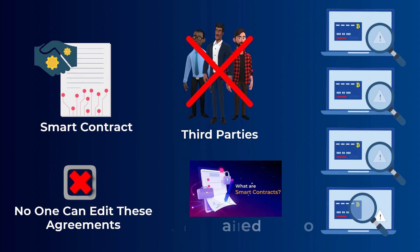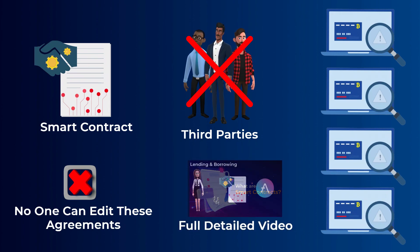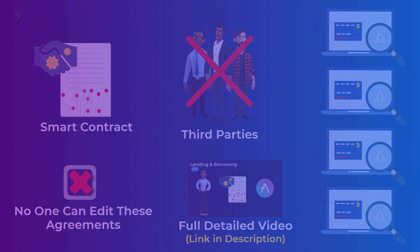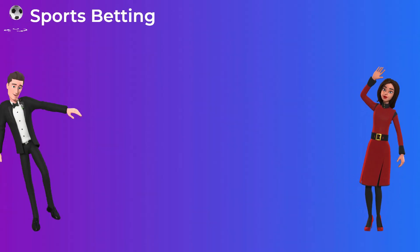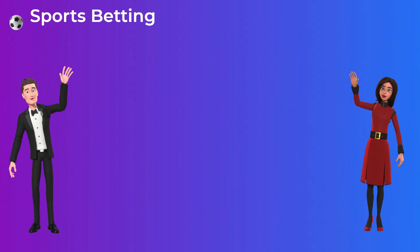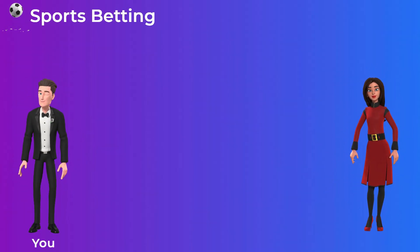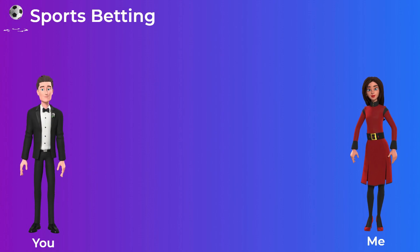We actually have a full detailed video about smart contracts if you want to learn more. But for now, one of the use cases is in the sports betting space — for example, we can bet on the results of a sports match.